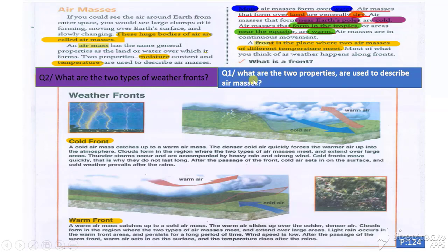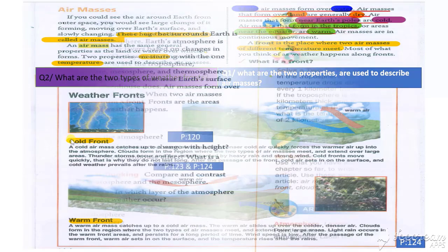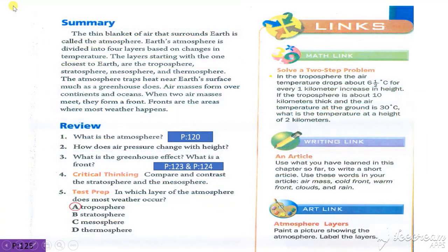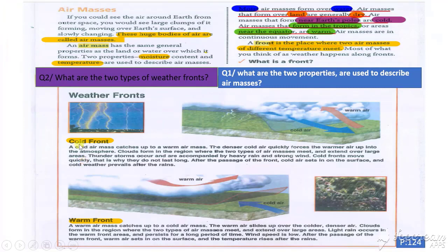And these are questions. Another question — do you remember, my pupils: what are the two types of weather fronts? The answer is: number one, cold front, and number two, warm front. Very important. Please try to pay attention to this question.